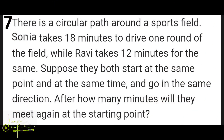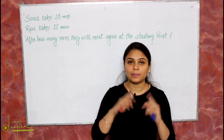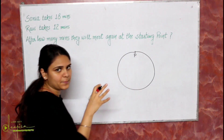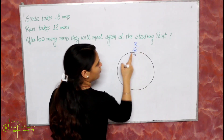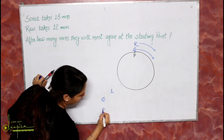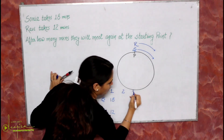Last question of this exercise — Question number 7: there is a circular path around a sports field. Sonia takes 18 minutes to complete one round, while Ravi takes 12 minutes. They both start at the same point, at the same time, going in the same direction. After how many minutes will they meet again at the starting point?